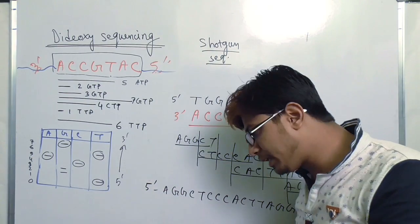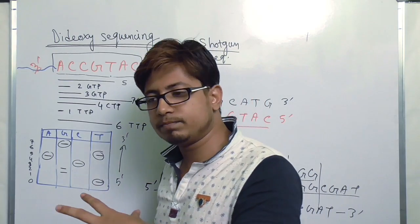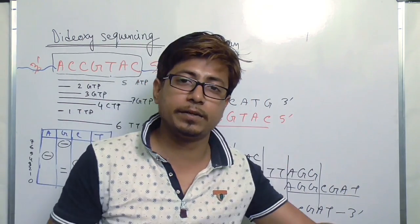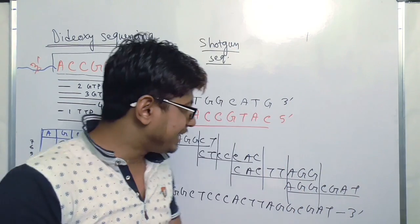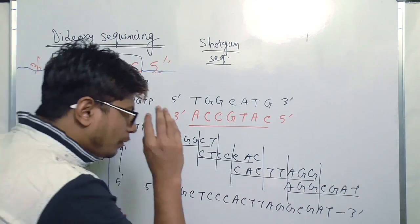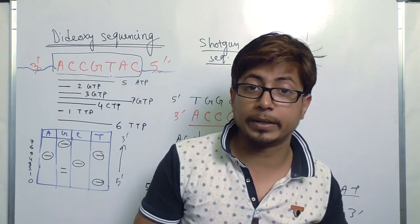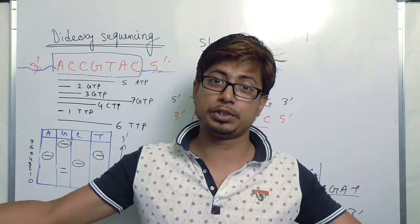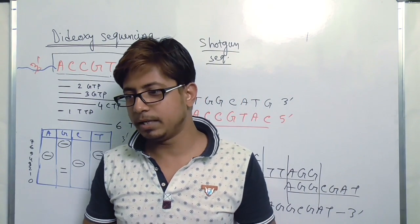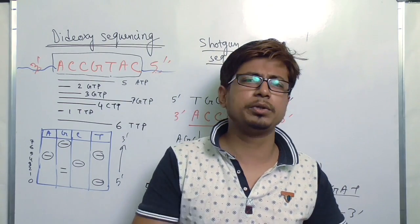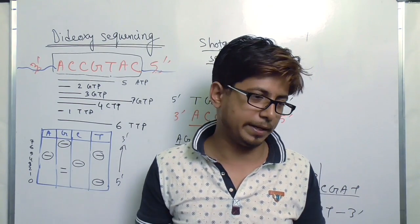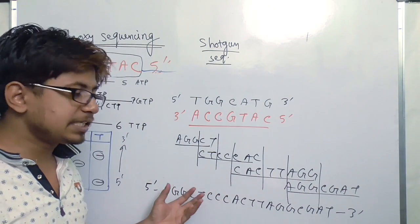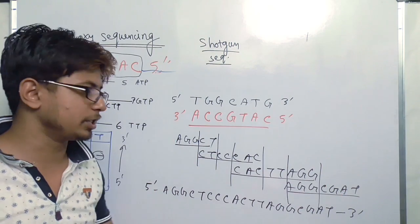Watch that video to understand the dideoxy method in details. But in shotgun method, there is no unique idea but the approach here is simply to break and simplify the large DNA fragments into smaller ones. The advantage of shotgun sequencing is that you can sequence data which is a huge genome by breaking them down. And the breaking is random so you don't need to use any restriction enzymes or any specific enzymes in there.